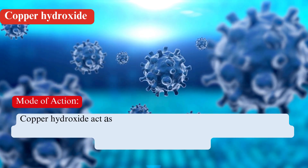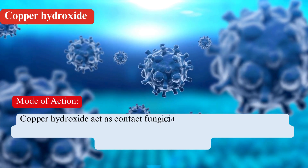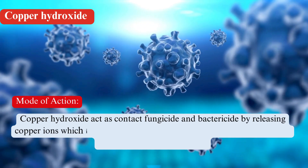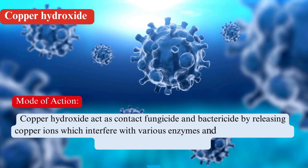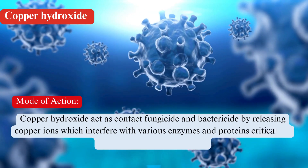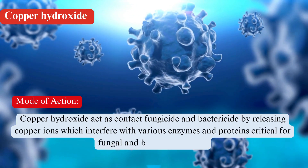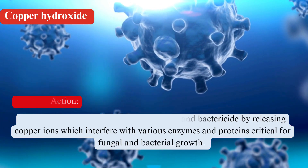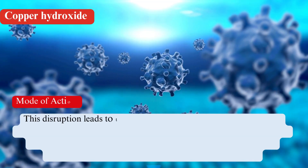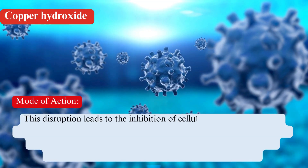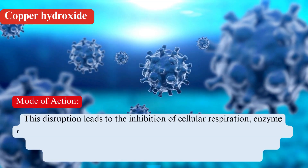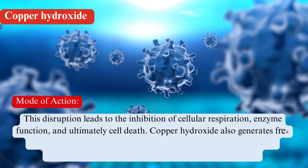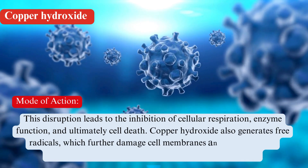Mode of action: Copper hydroxide acts as a contact fungicide and bactericide by releasing copper ions, which interfere with various enzymes and proteins critical for fungal and bacterial growth. This disruption leads to the inhibition of cellular respiration, enzyme function, and ultimately cell death.